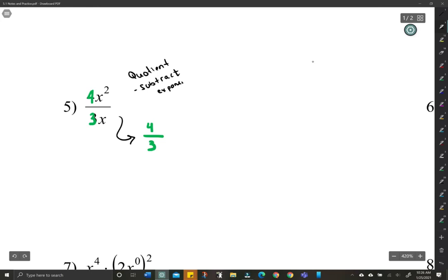What we can subtract are the exponents. So we have 2 and 1. It's like taking x squared minus 1, which means our final is just 4 over 3. 2 minus 1 is x to the first.